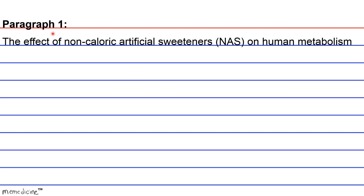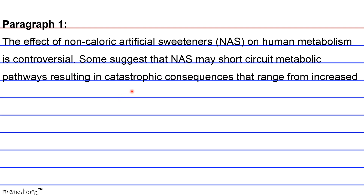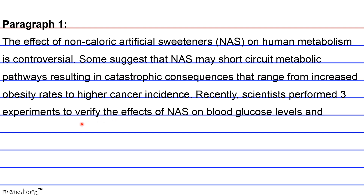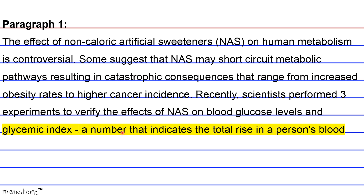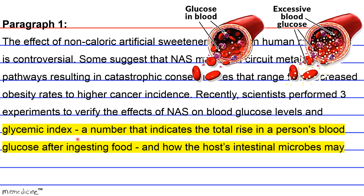The effect of non-caloric artificial sweeteners, NAS for short, on human metabolism is controversial. Some suggest that NAS may short-circuit metabolic pathways resulting in catastrophic consequences that range from increased obesity rates to higher cancer incidence. Recently, scientists performed three experiments to verify the effects of NAS on blood glucose levels and glycemic index — a number that indicates the total rise in a person's blood glucose after ingesting food — and how host intestinal microbes may modulate this effect.